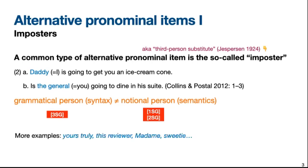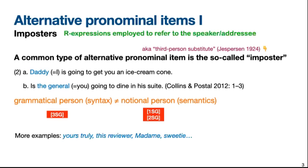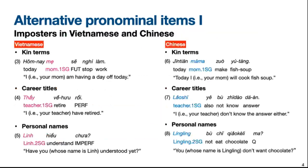There are many more impostors in English, such as 'yours truly', 'this reviewer', etc. Basically, we can say that impostors are R-expressions that are employed to refer to the speaker or the addressee. Outside Europe, impostors also abound in Asian languages like Vietnamese and Chinese. In both languages, commonly used impostors include kinship terms, career titles, and personal names.